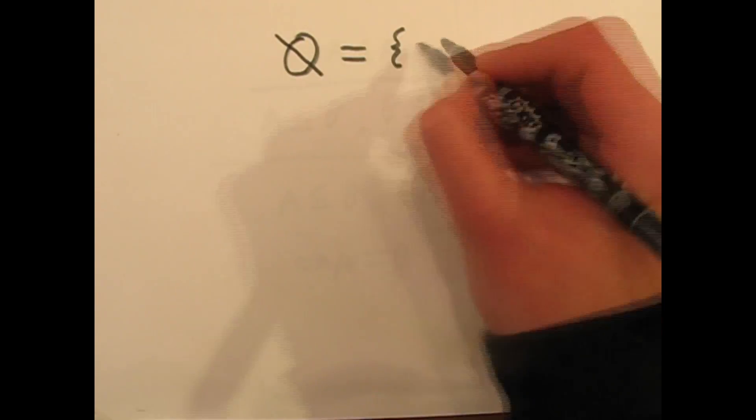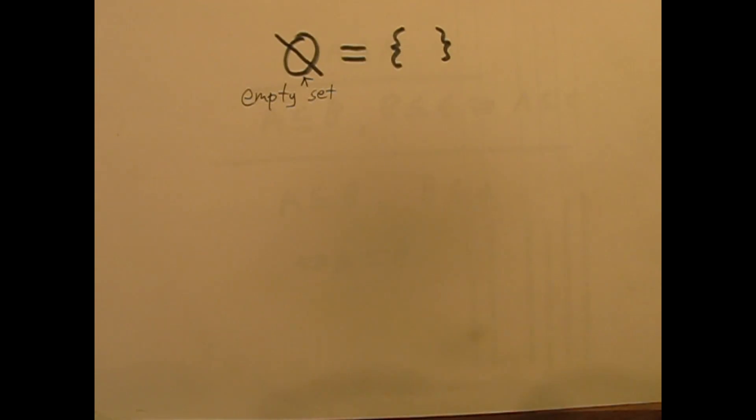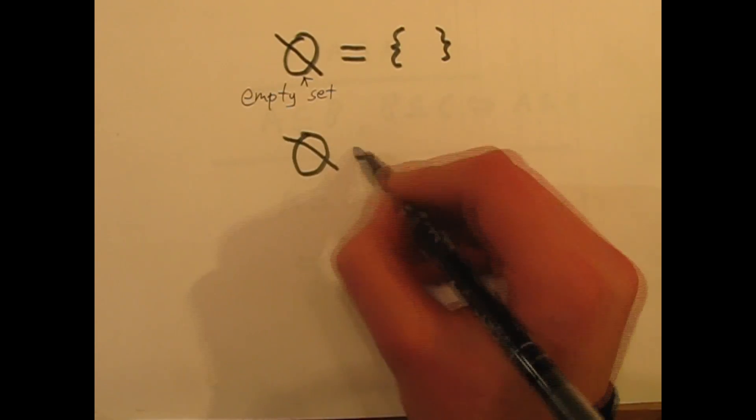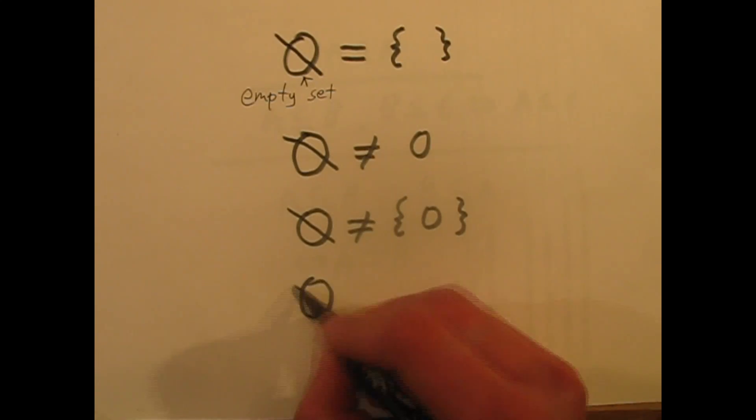There is also a special set called the empty set. Though a lot of people tend to confuse it with zero, this set has absolutely no components. We can say that the empty set is a subset of any set.